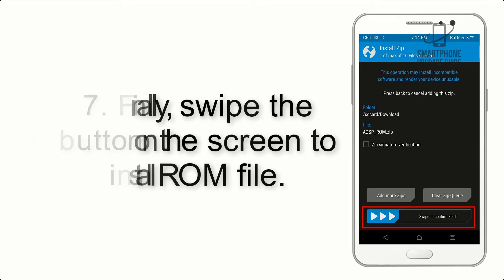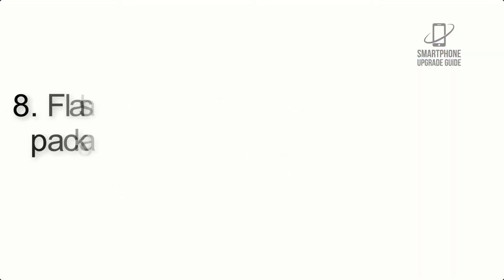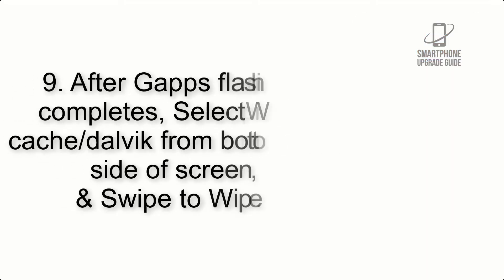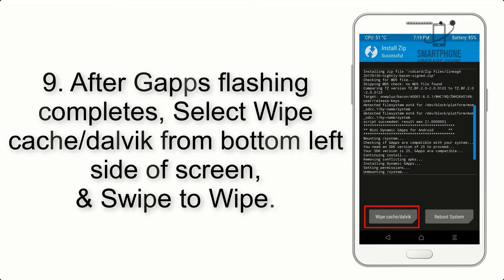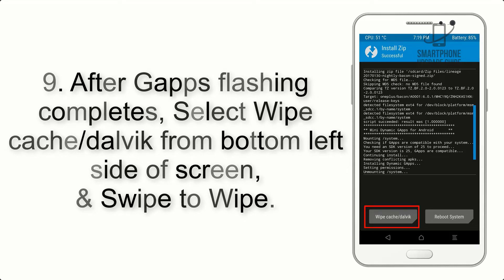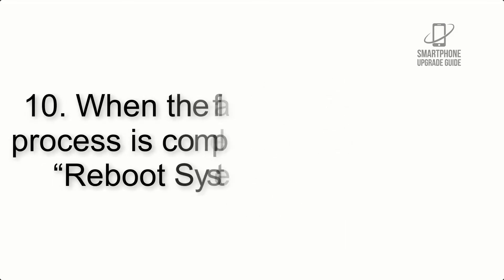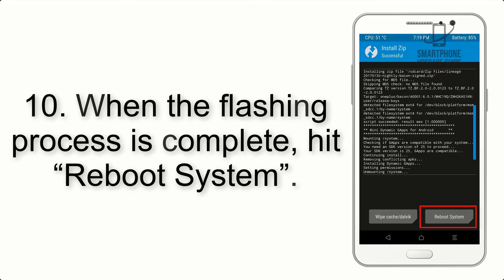Step 7: Swipe the button on the screen to install the ROM file. Step 8: Flash the GApps zip package in the same manner. Step 9: After GApps flashing completes, select Wipe Cache and Dalvik from the bottom left side of the screen and swipe to wipe.